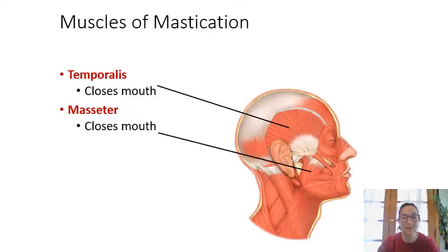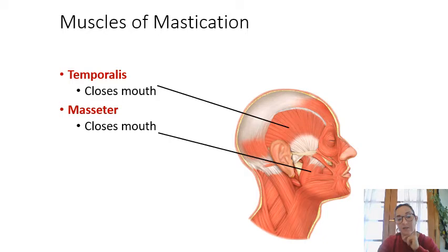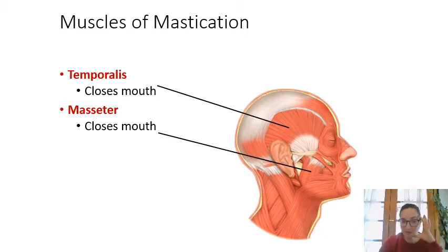Temporalis originates on the temporal bone and inserts on the mandible. Masseter also inserts on the mandible. Both of these muscles close the mouth — they elevate the jaw.